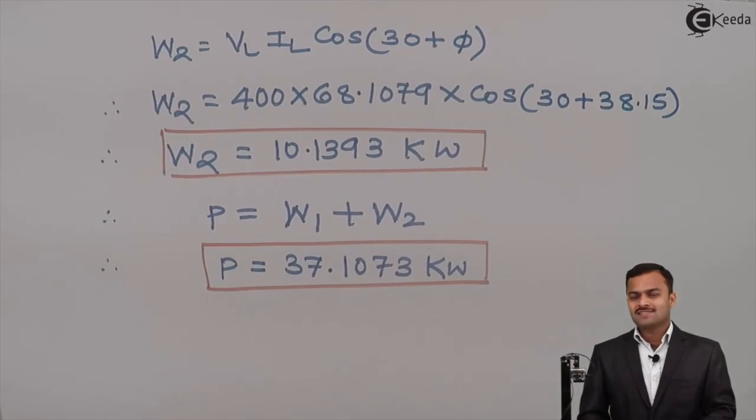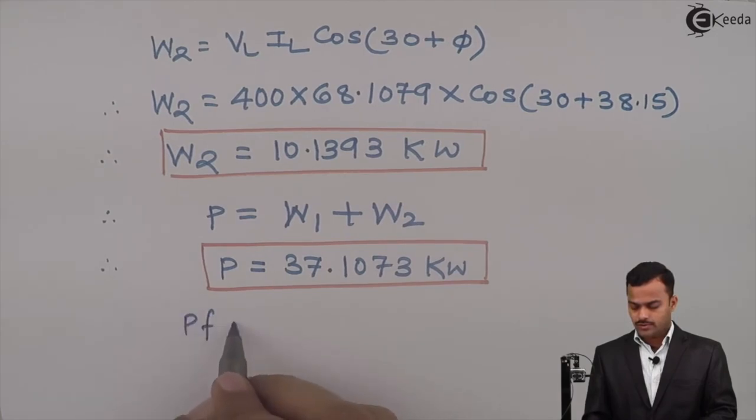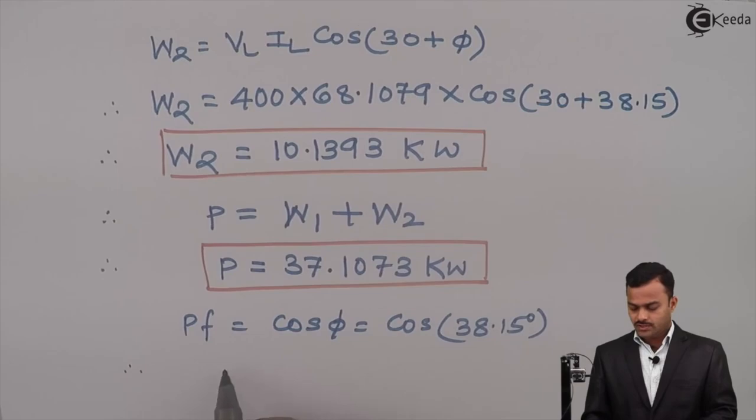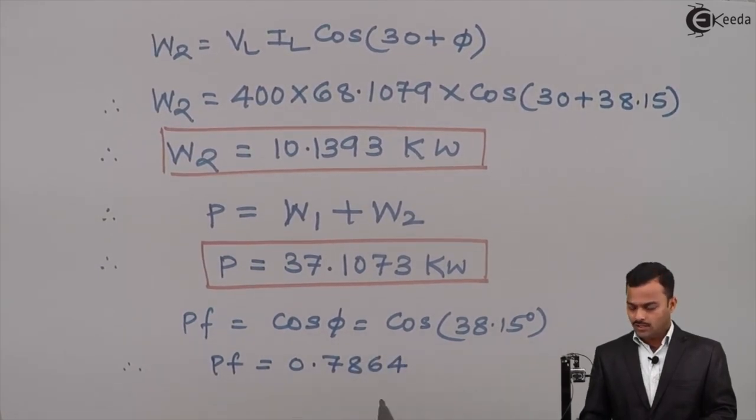Since we are not changing any R or L in a phase, whether it is star or delta connected load, phi will remain the same. Hence power factor will also remain the same. So power factor is cos phi, where phi is 38.15. The solution gives you 0.7864. Being an inductive coil, the nature of power factor will be lagging.